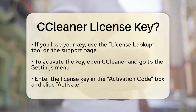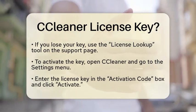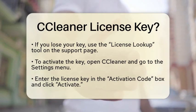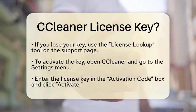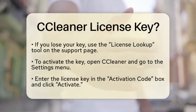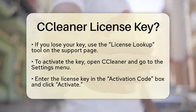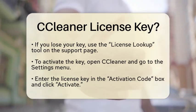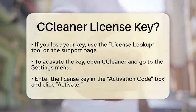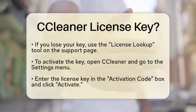Now, let's talk about how to activate your key. First, open the CCleaner application on your computer. Next, go to the Settings menu and select Subscriptions. You will see a box labeled Activation Code. Enter your license key there and click the Activate button.